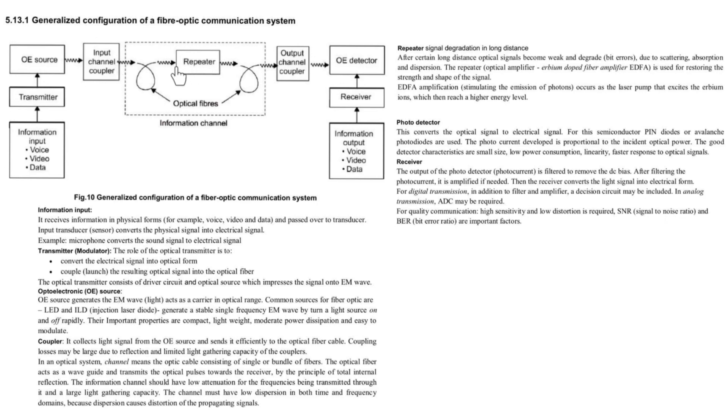Next, repeater. After a long distance, the optical signal becomes weak and it will degrade due to scattering, absorption and dissipation. The repeater which is optical amplifier is used for restoring the strength and shape of the signal. After long distance, the signal will become weak and degraded. That is why the repeater which is an optical amplifier is used to restore the strength and shape of the signal. Most commonly used amplifier is EDFA amplifier which is erbium doped fiber amplifier.